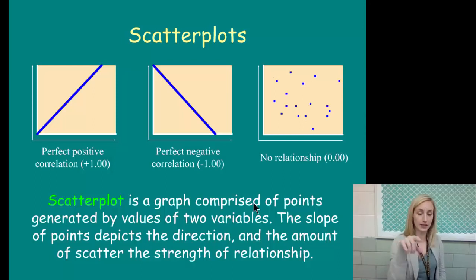Let's quickly talk about scatter plots. I want you to write this down: scatter plots are how correlations are graphed. The scatter plot is a graph comprised of points generated by values of the two variables in a correlation. The slope of points depicts the direction, and the amount of scatter depicts the strength of the relationship.